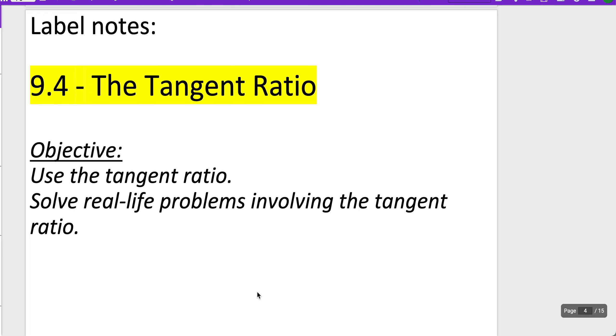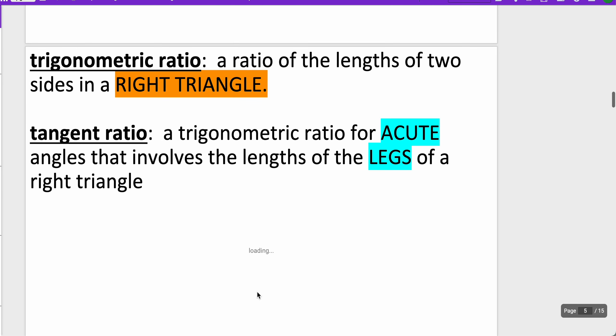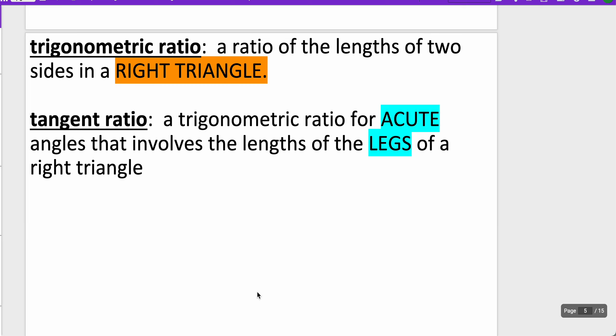We're going to be able to use it and then solve real-life problems involving the tangent ratio. First, we want to know that a trigonometric ratio is a ratio of the lengths of two sides in a right triangle.